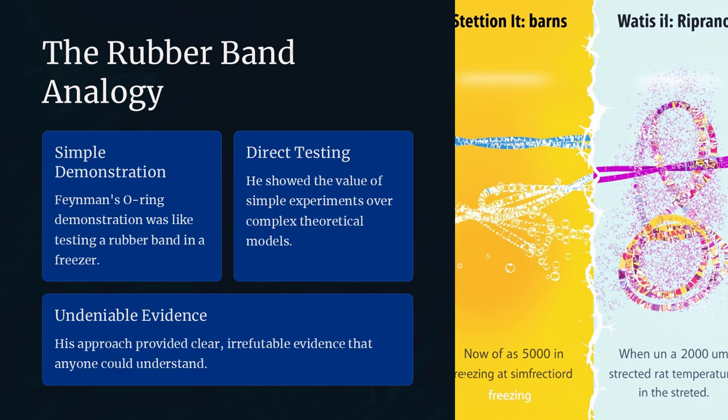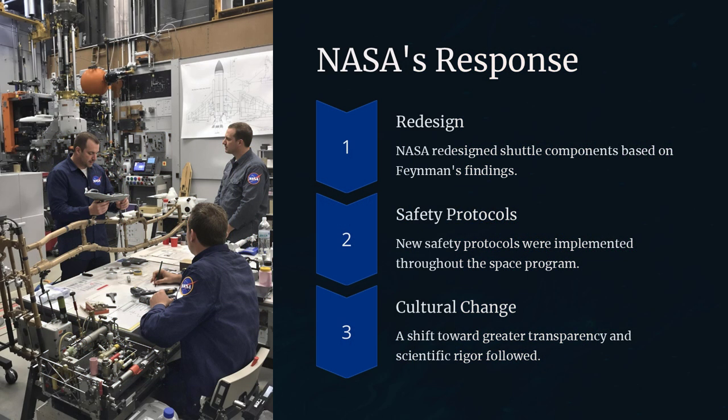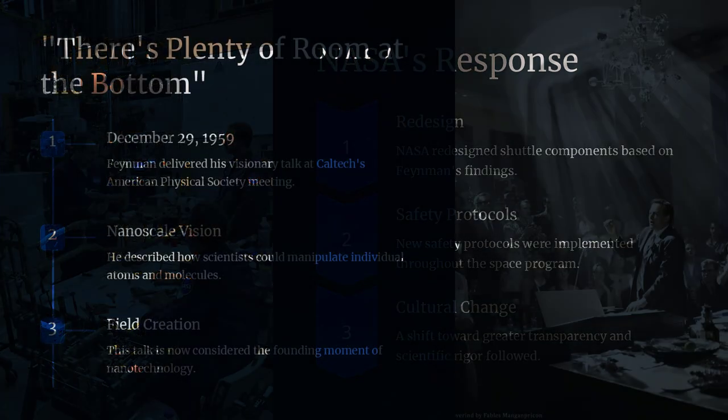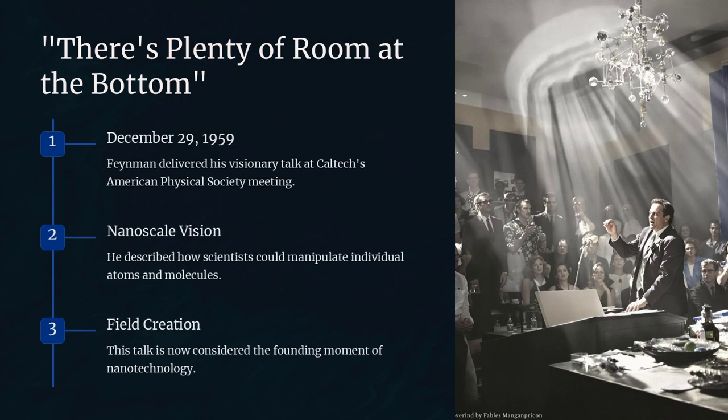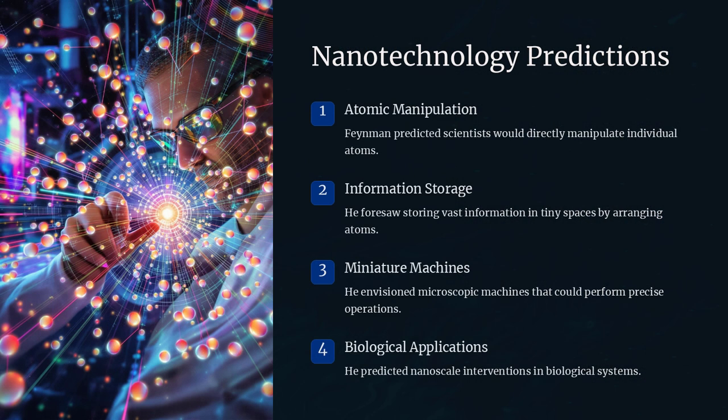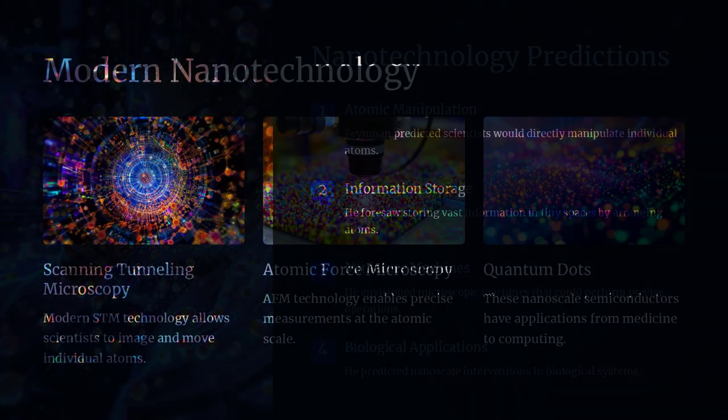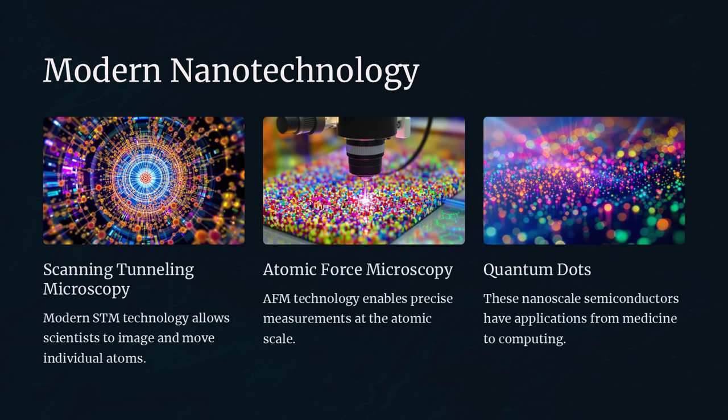Another key aspect of Feynman's inventive methodology was his use of analogies and cross-disciplinary thinking. He would often draw parallels between seemingly unrelated areas to gain new insights. For instance, his insights into the behavior of electrons sometimes drew on analogies from classical mechanics, allowing him to predict unexpected quantum behaviors.